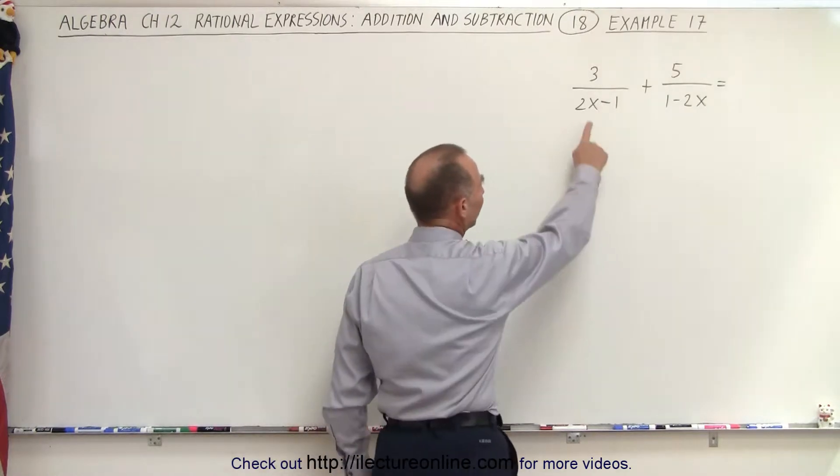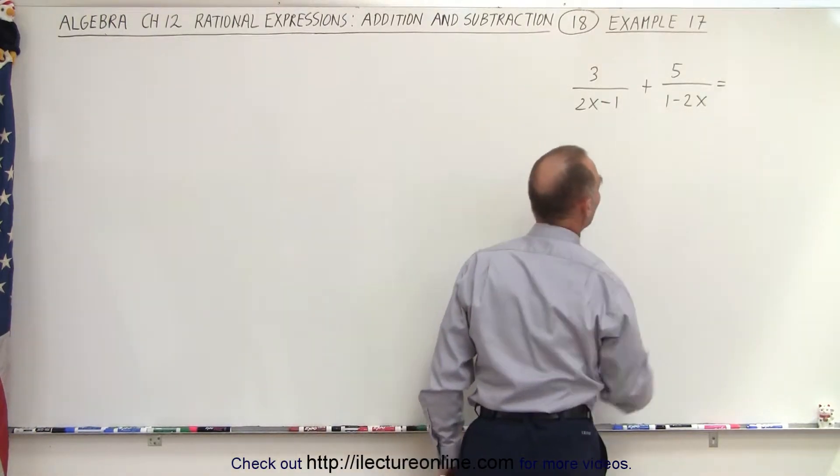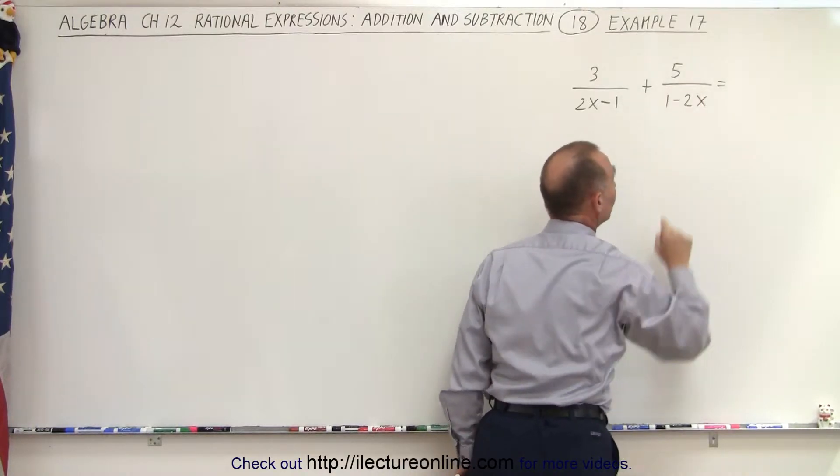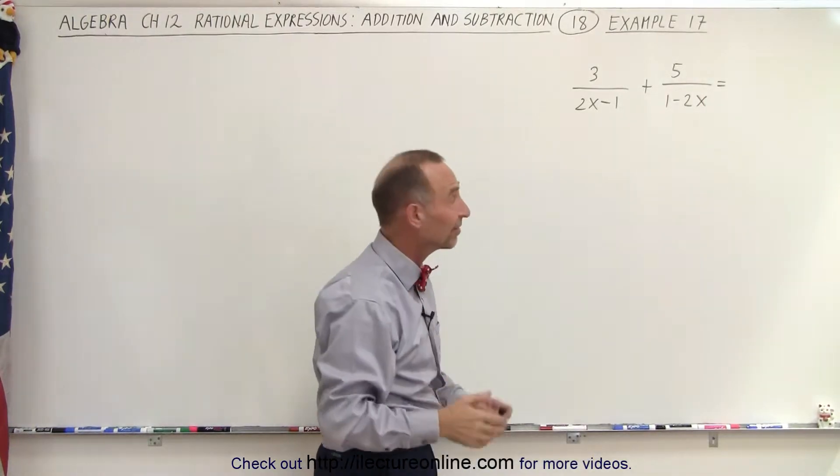Notice here we have a 2x minus 1 and a 1 minus 2x. If I multiply the denominator here by a negative 1 and I do the same with the numerator, I can actually make it look exactly the same.